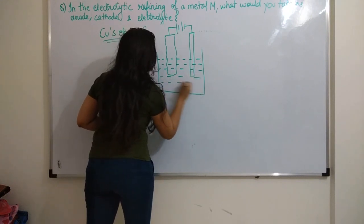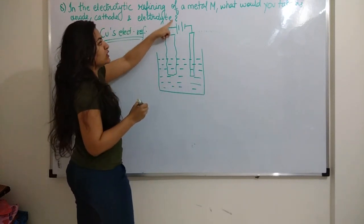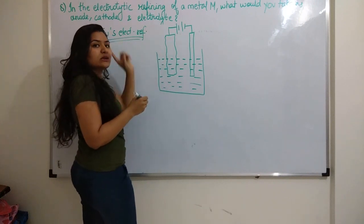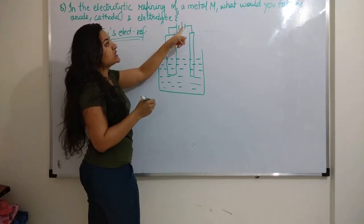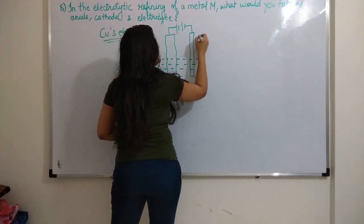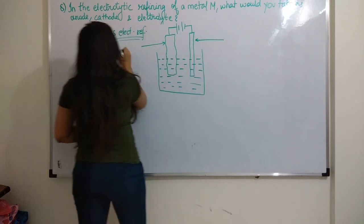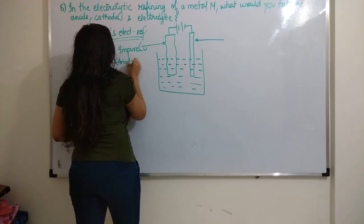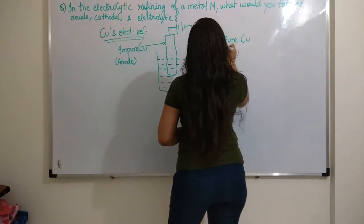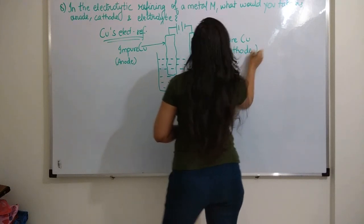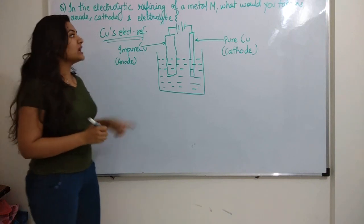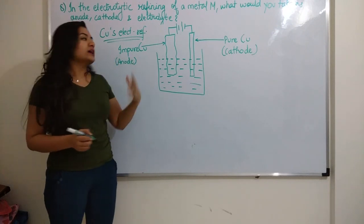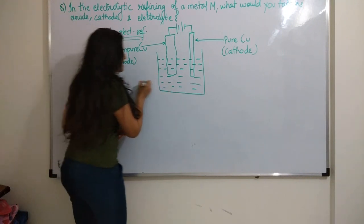You have impure copper which is taken as anode. See, that is connected to the positive terminal of the battery. So impure copper is anode. Anode is connected always to positive terminal, and cathode is connected to the negative terminal. So cathode is the pure copper strip.